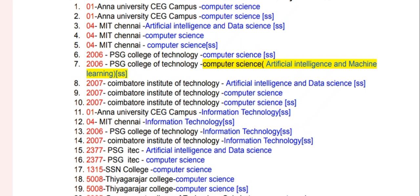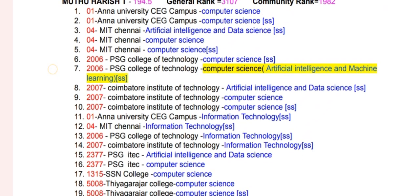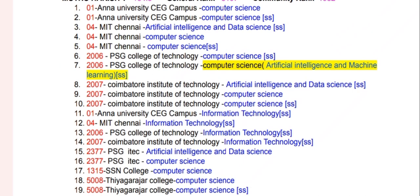You can have a choice for the first row. I will be coming to computer related courses. This is the course of CIG Campus. At CIG Campus, we have computer science first.